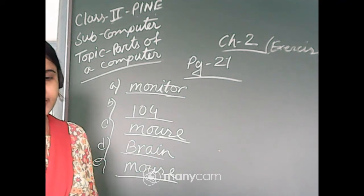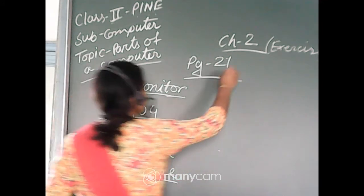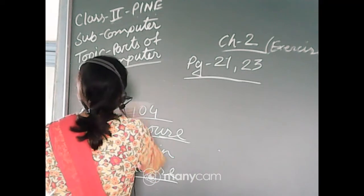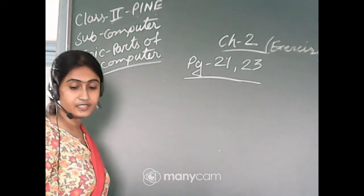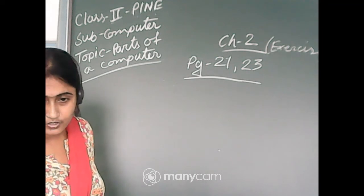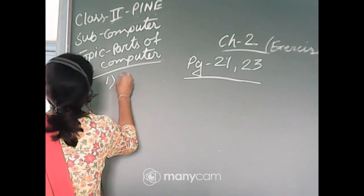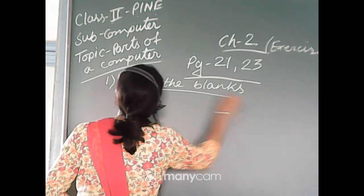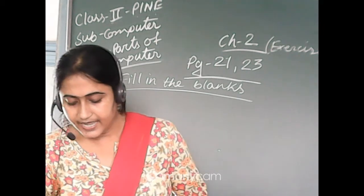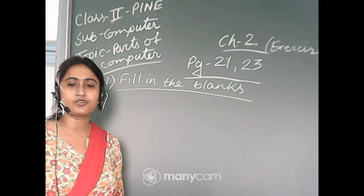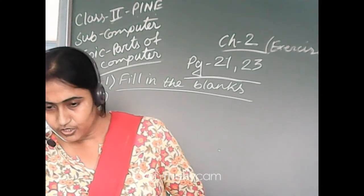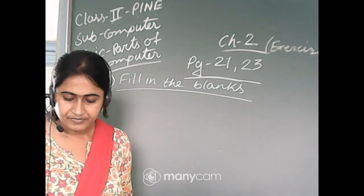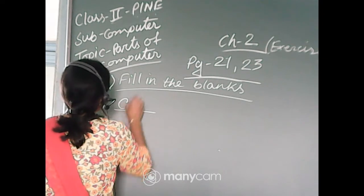Next, turn over to page number 23 — My Practice Zone. I will discuss My Practice Zone now. Number 1: fill in the blanks. Number A: the dash is known as the brain of a computer. Very good, Potushna, Oshmi, Reza, Auditro. Auditro, you should write in capital letters — C-P-U — because it is a short form of Central Processing Unit. The CPU is known as the brain of a computer.